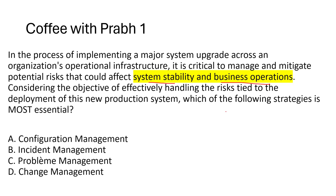The question is asking: when deploying something new, how do you mitigate and prevent risk? Option A is configuration management — it ensures uniformity of configuration across the organization, but the question is not about preventing configuration issues. It's about preventing risk from a new deployment. Option B, incident management, has the ultimate goal of reducing impact. Option C, problem management, is used to track root cause.